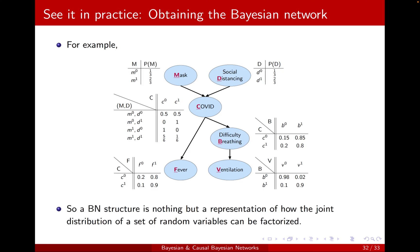A Bayesian network structure is nothing but a representation of how the joint distribution of a set of random variables can be factorized.